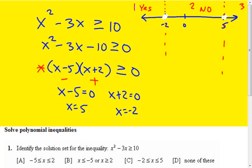Region three would be picking some number larger than five, like ten. That would give me a positive number here, a positive number in the second parenthesis. Positive times a positive is a greater than zero number, so this is a yes.